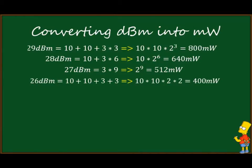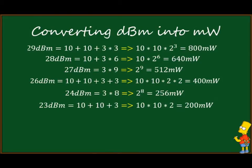26 dBm = 10 + 10 + 3 + 3 = 10 × 10 × 2 × 2 × 2 = 400 milliwatts. 24 dBm = 2^8, or alternatively 30 − 6 = 250 milliwatts. 23 dBm = 10 + 10 + 10 + 3 = 200 milliwatts. 22 dBm = 10 + 12 = 160 milliwatts.